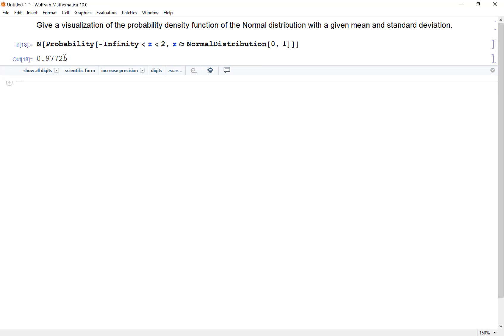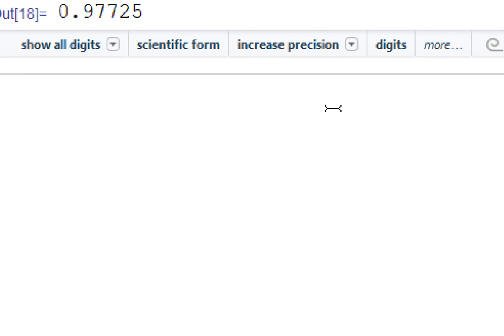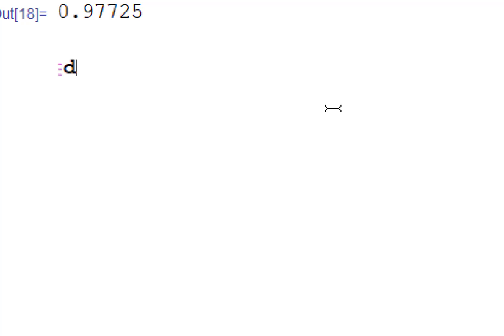And so there I have it. That would be the probability going from 0 to 2 and there's a standard normal curve. Now how do you get this distribution function? You can hit escape dist tab and it'll give you that distribution symbol which is very useful.